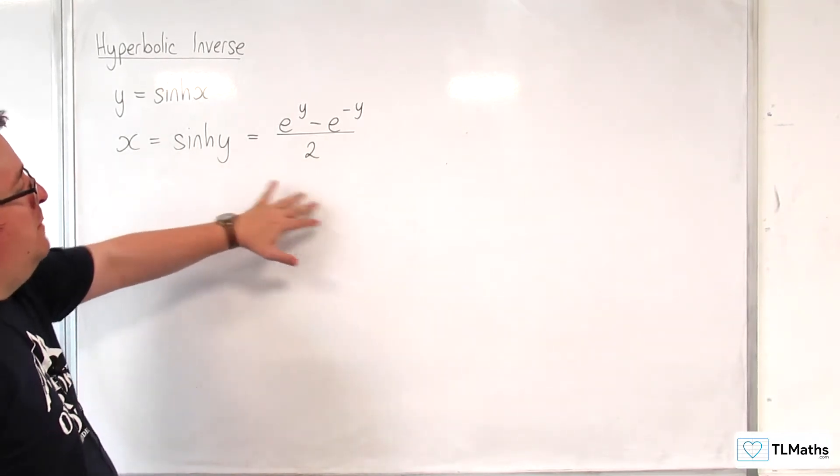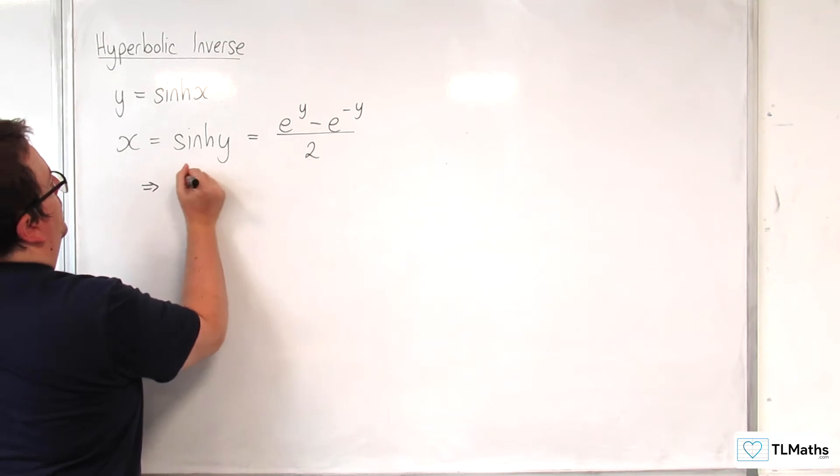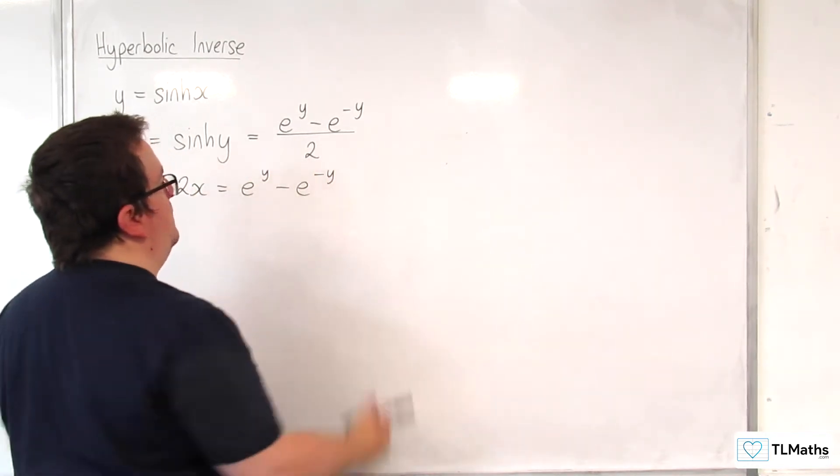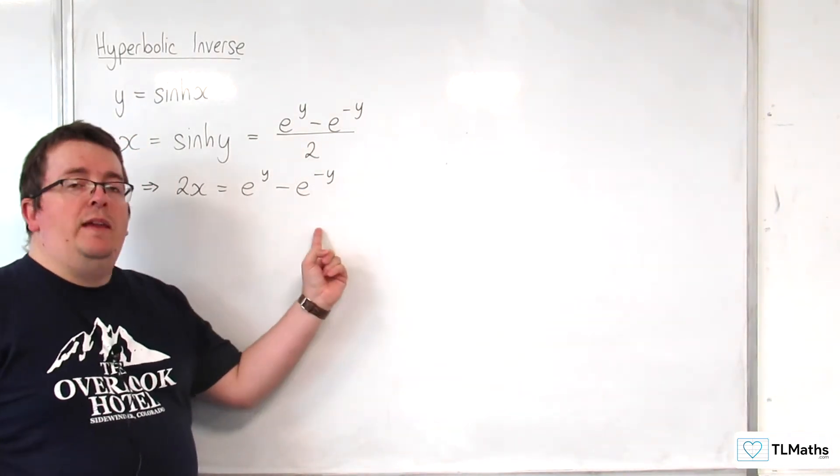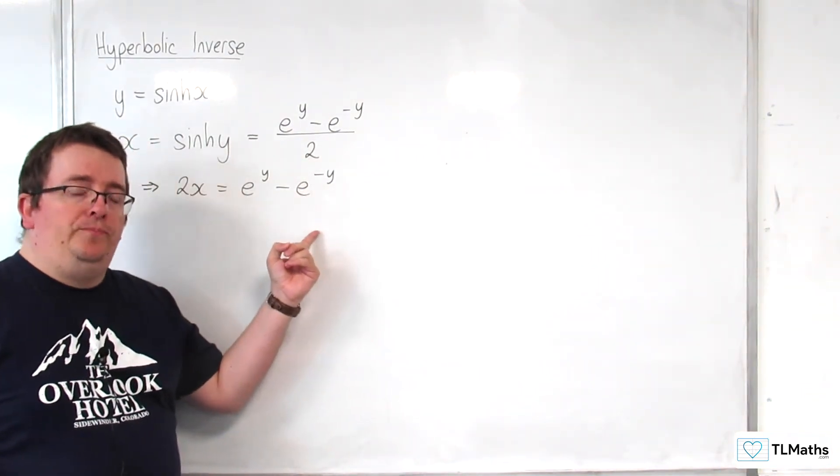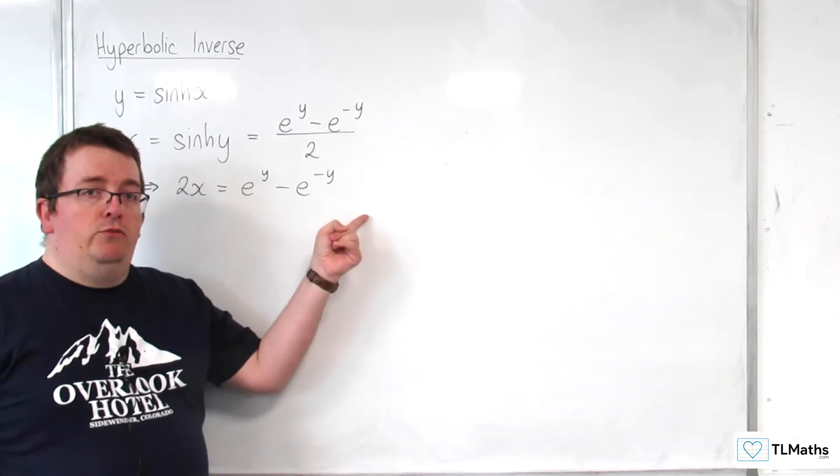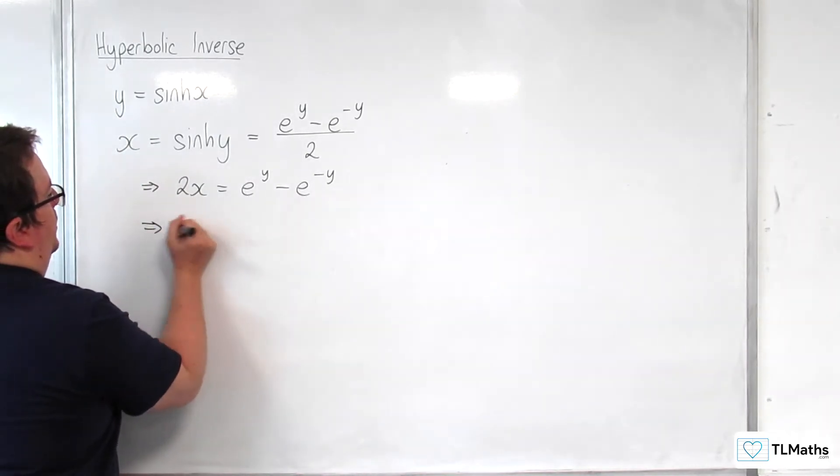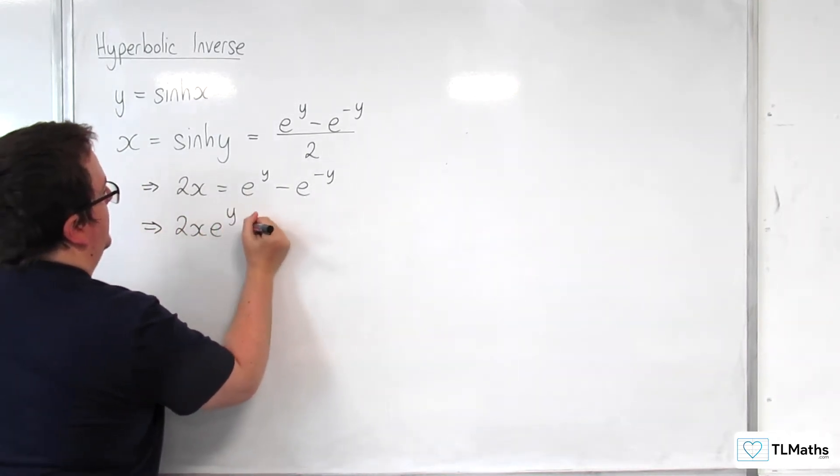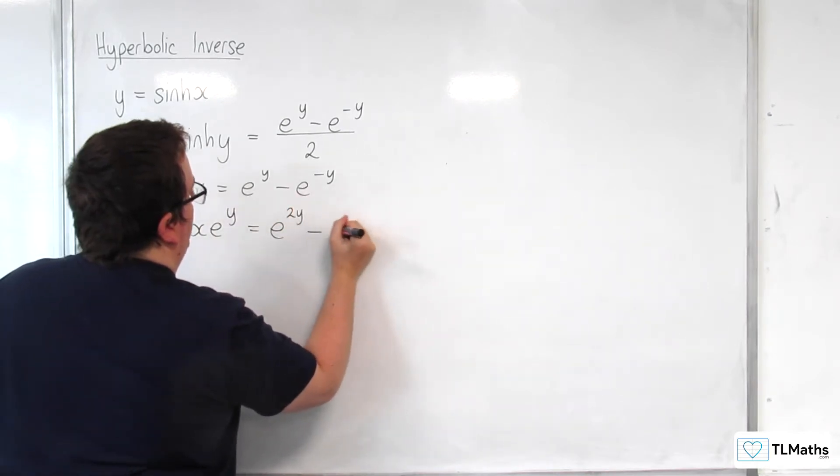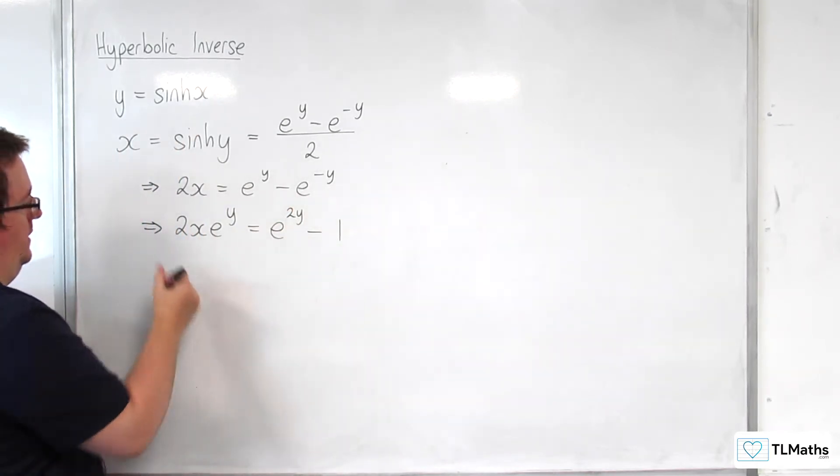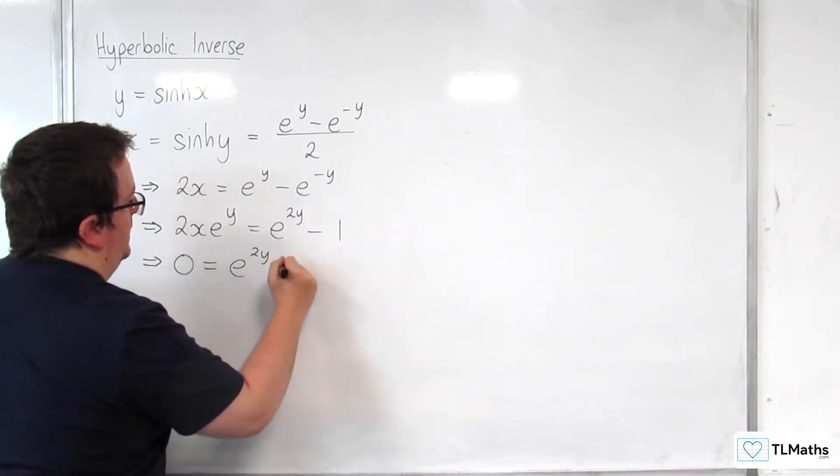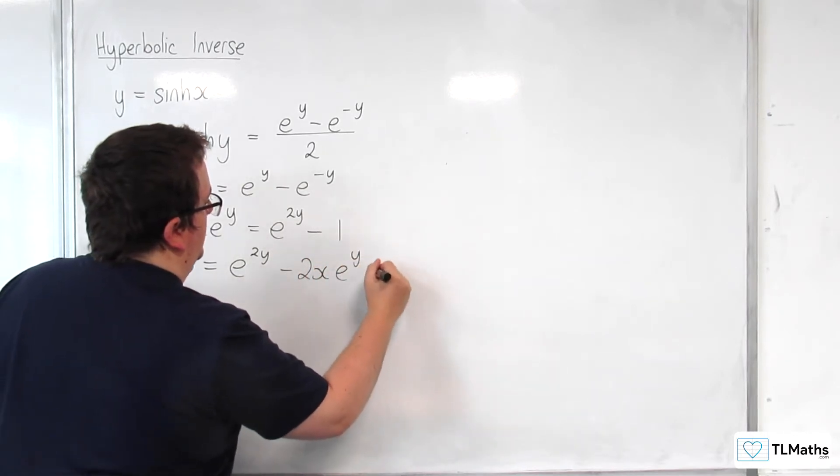So what I'm going to do is I'm going to multiply through by 2. So 2x is equal to e to the y take away e to the minus y. Now what I want to do here, my target, is to be able to write this as y equals. So I'm going to multiply through now by e to the y to get rid of this term here. So we'll have 2xe to the y is equal to e to the 2y take away 1. And I'm going to rearrange this to get 0 on the left-hand side. So e to the 2y take away 2xe to the y take away 1.